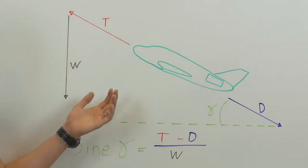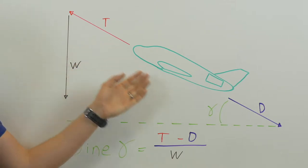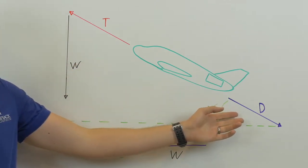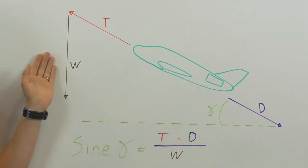You can visualize it like this. Picture T, the thrust of the airplane, opposed to D, the drag of the airplane, with W, the weight of the airplane, on the other leg.